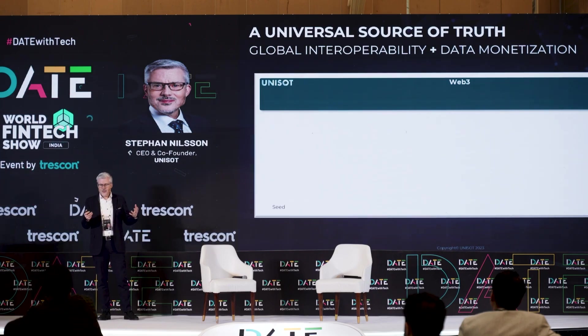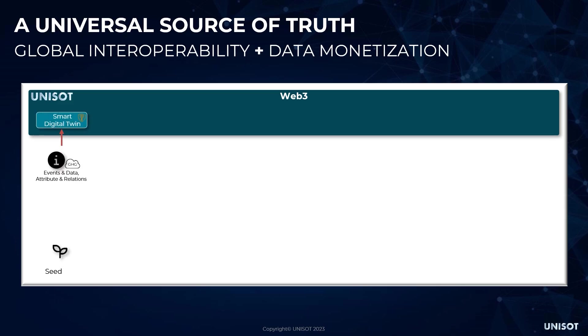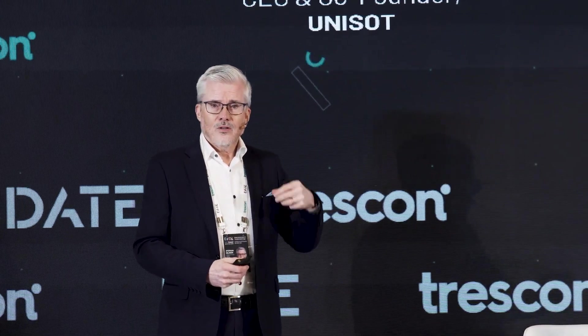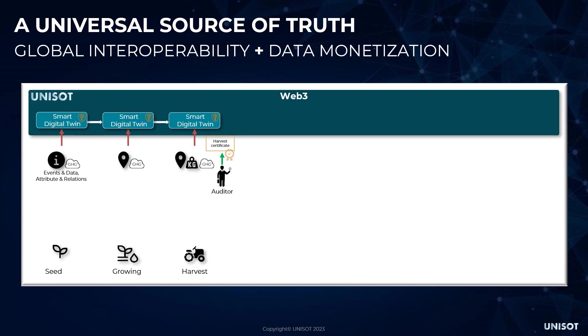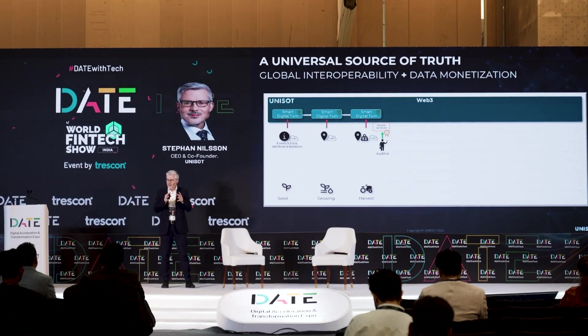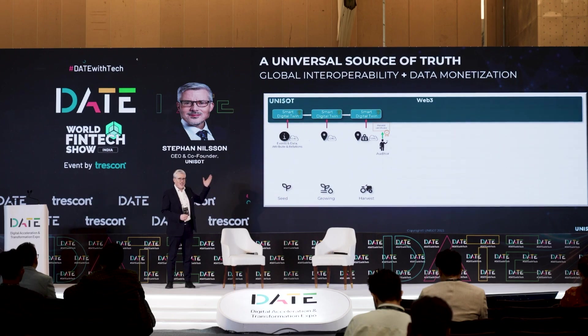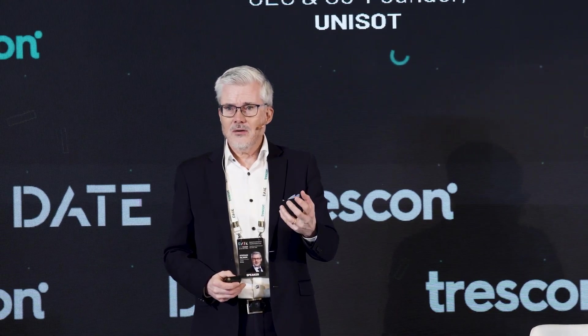By letting every actor in the supply chain participate, I'll show the supply chain from seed to plate. When a seed producer creates a seed, they create what we call a smart digital twin in the blockchain — a digital copy of the physical product. To this digital twin, they can add information about ingredients, quality, origin, and so on. We still need auditors; blockchain is not a magic system — if you put bad information in, you get bad information out. But the difference is that a company digitally signs the information they put in, so they are liable for it.